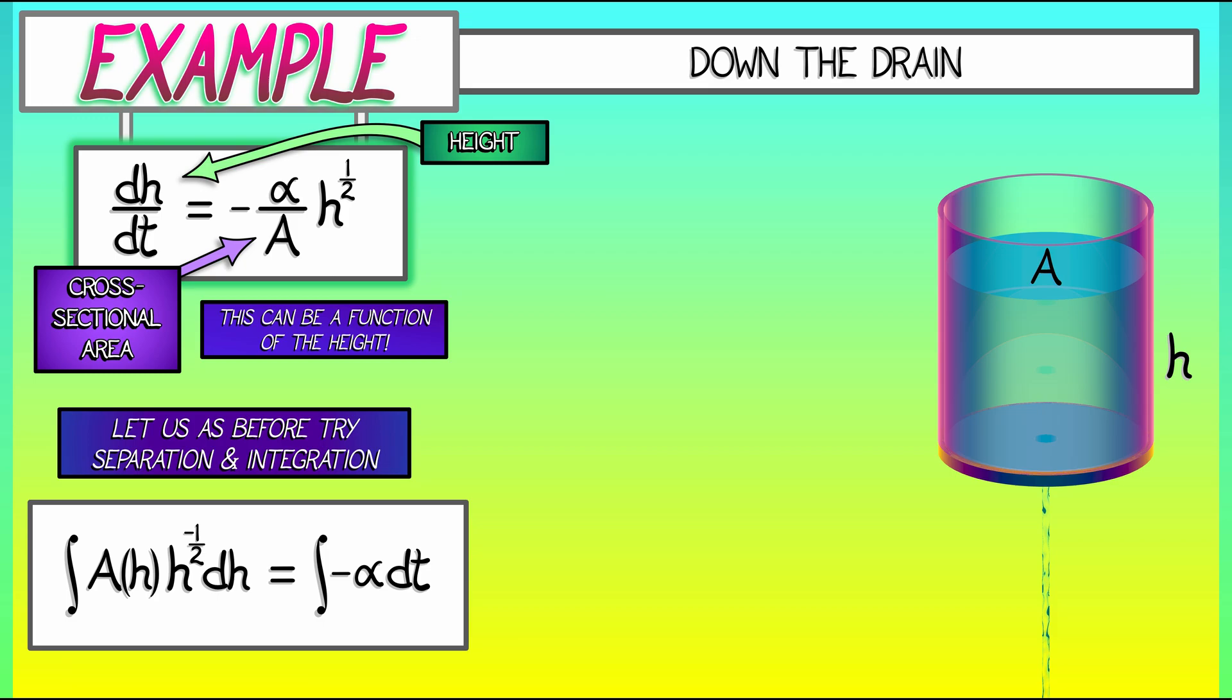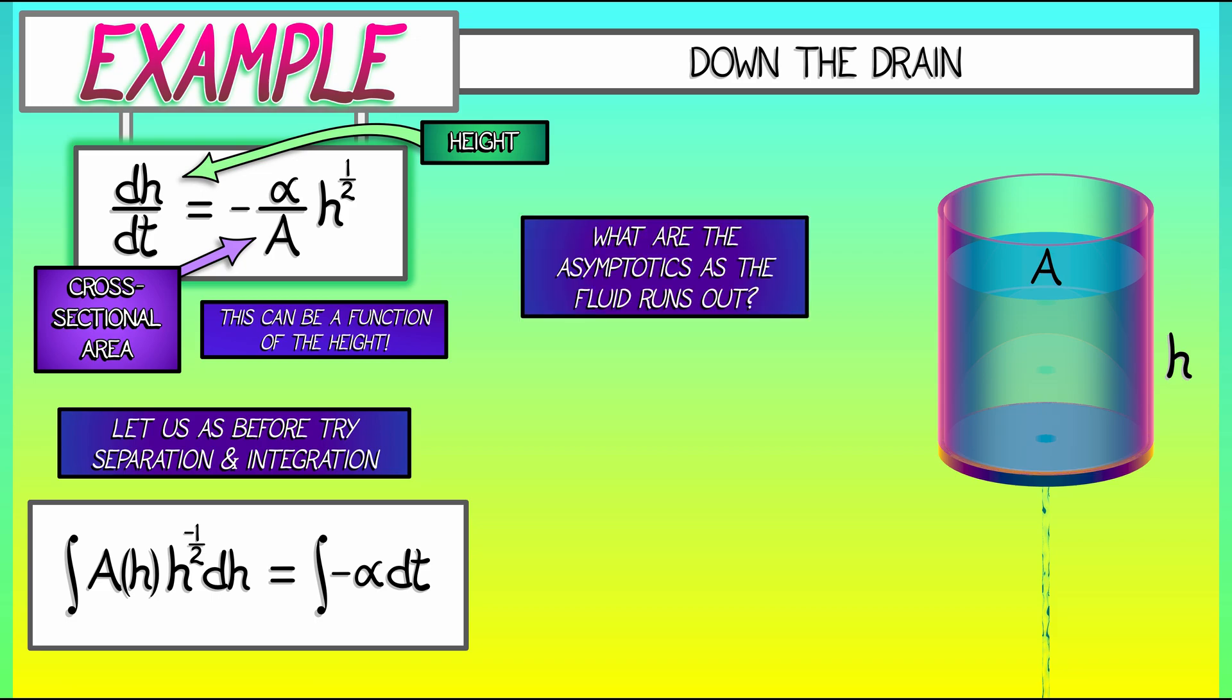Solve for h. Now, rather than do so exactly, what I'd like to do is focus on the asymptotics as the fluid is running out. What is happening in the limit as h is going to zero?